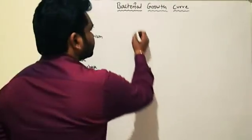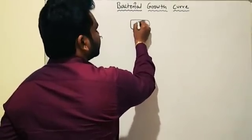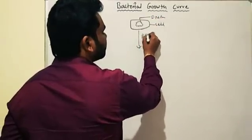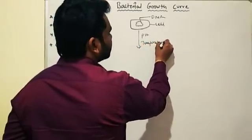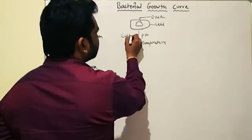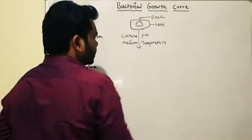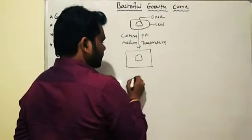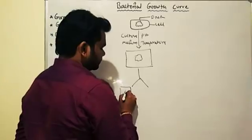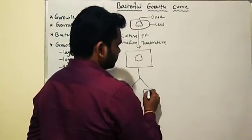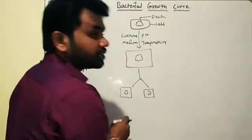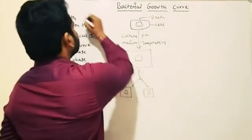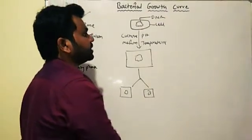Let's see what is growth. This is a bacterial cell with DNA. When you provide proper pH and temperature along with suitable culture medium, this cell will increase in its size and later which is followed by multiplication. The changes which are happening inside the bacteria when you provide proper pH, temperature and culture medium are defined as growth.